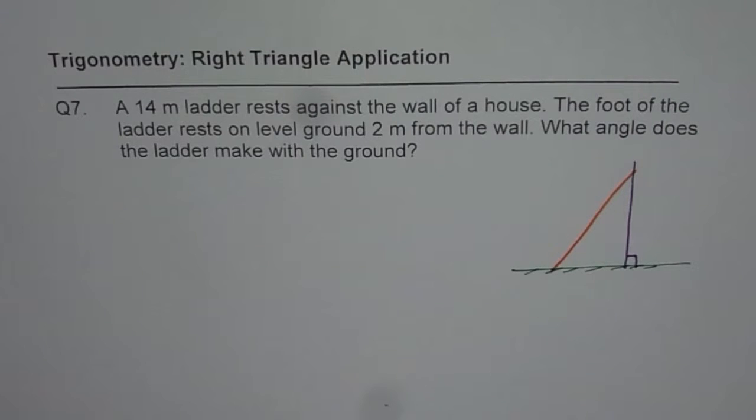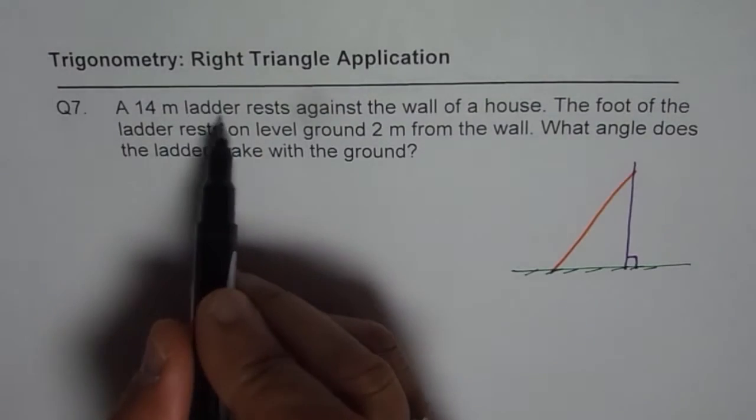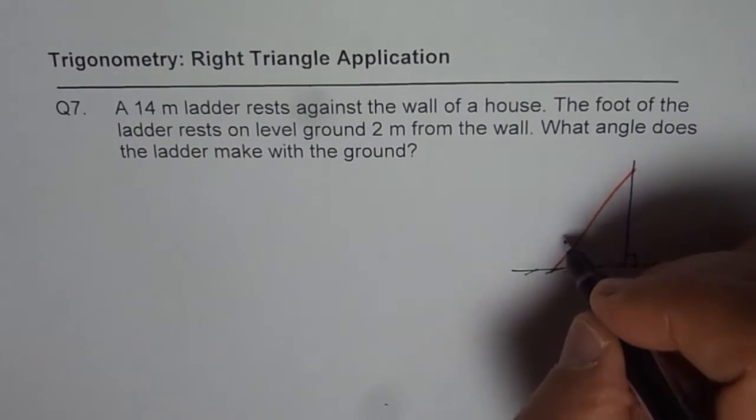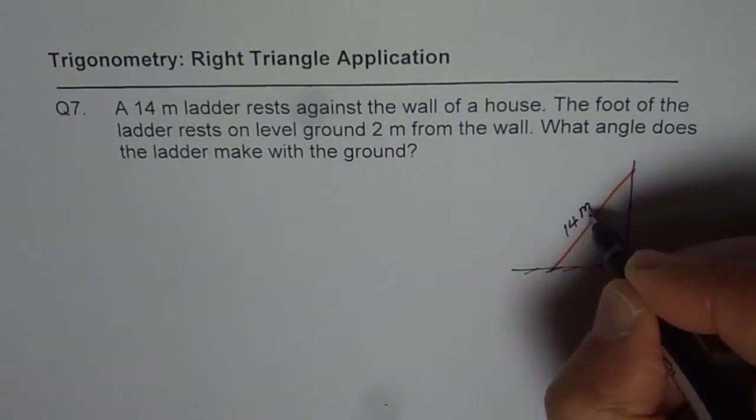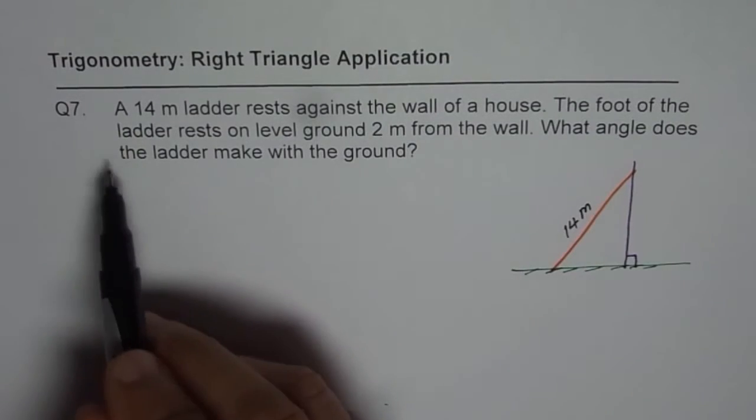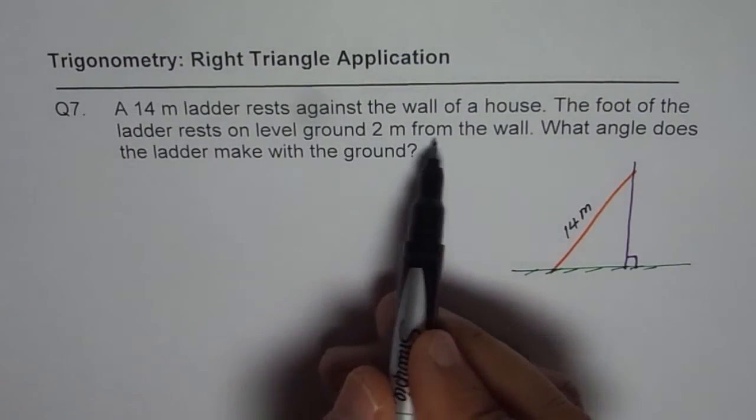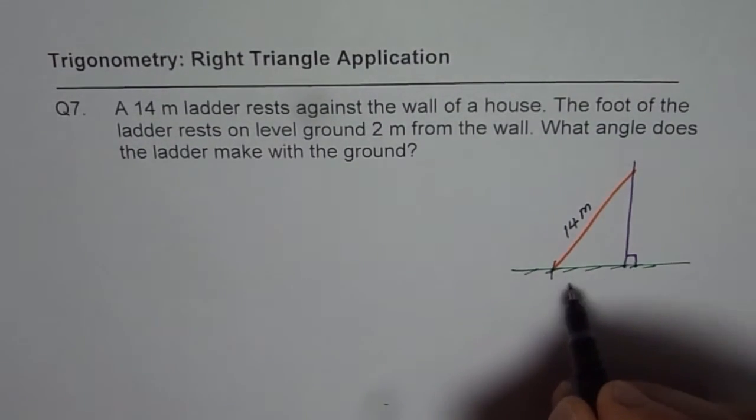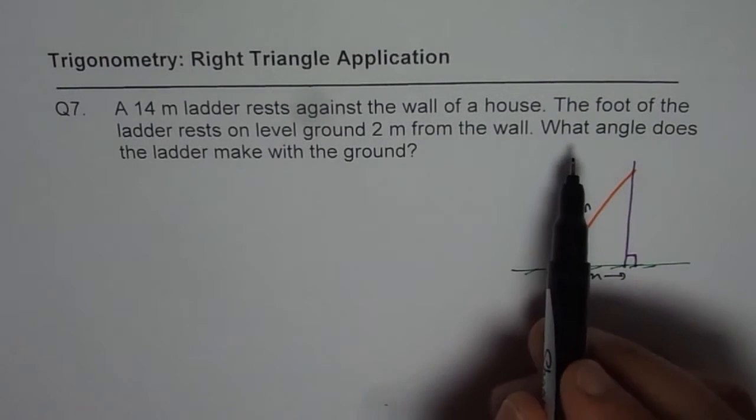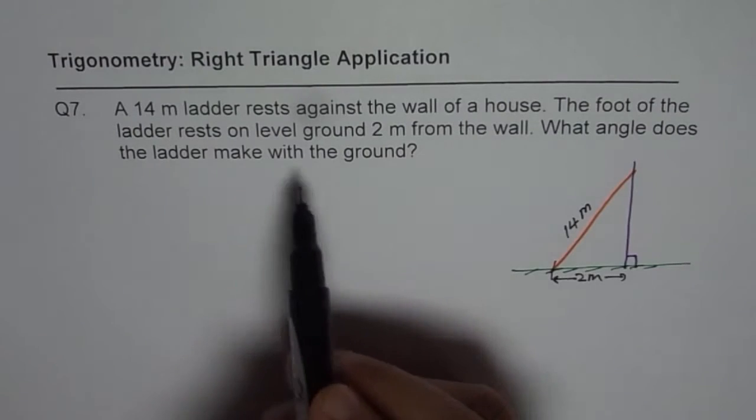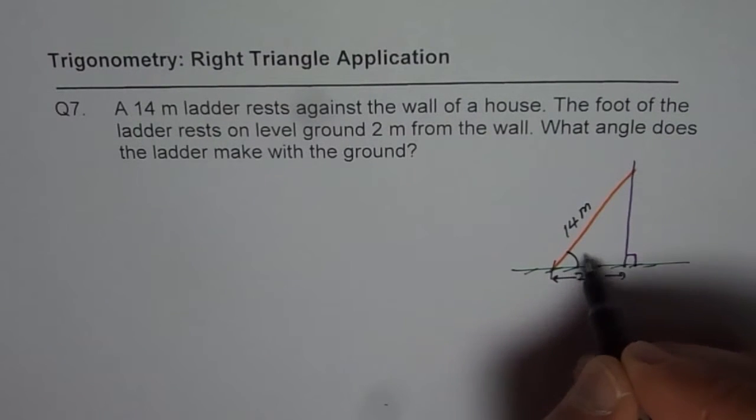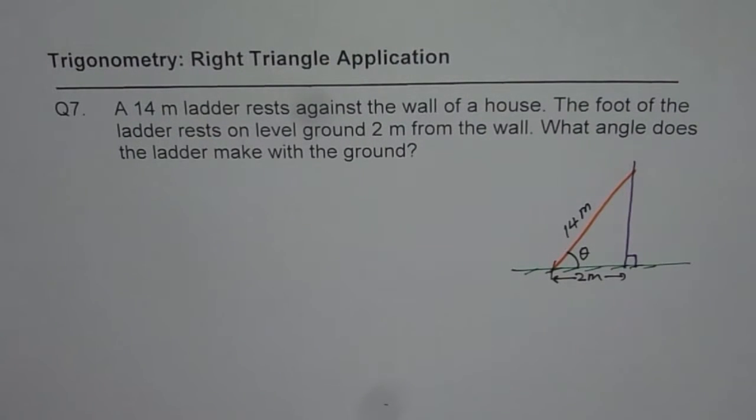What is given to us? It is given that a 14 meter ladder rests against the wall. So the length of the ladder is 14 meters. The foot of the ladder rests on level ground 2 meters from the wall. So this distance is 2 meters. What angle does the ladder make with the ground? So this angle is what we need to find.